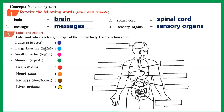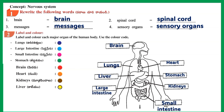Section 2: Label and Color the following — Brain, Lungs, Liver, Large Intestine, Heart, Stomach, Kidneys, Small Intestine.